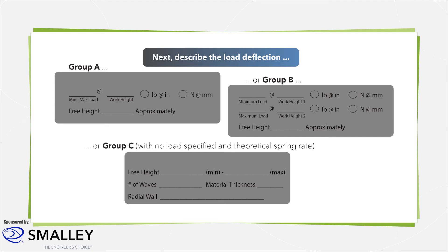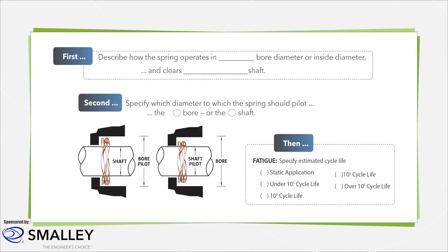A wave spring can also be used in a static application such as preloading a bearing. In the bearing example, the spring is compressed to a work height and remains at that height for the lifetime of the application. This reduces vibration and ultimately prolongs the life of the bearing.